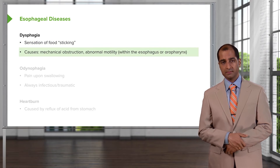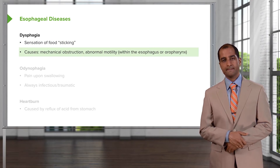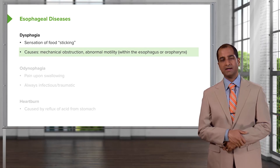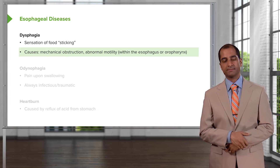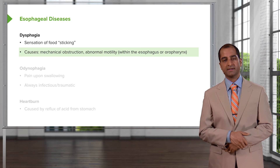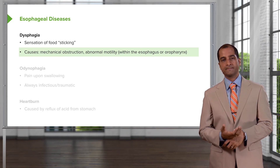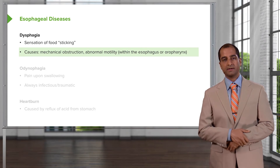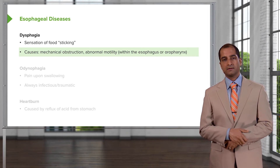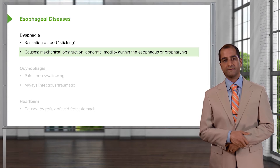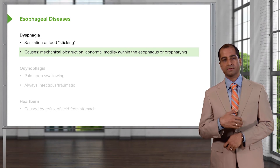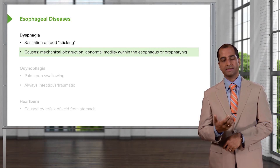Causes include mechanical obstruction. When we talk about the behavior of dysphagia — what kind of swallowing difficulty is the patient actually feeling? There's a possibility of mechanical obstruction; maybe the lower esophageal sphincter is not properly opening — welcome to achalasia. Maybe there's a tumor within the esophagus making it difficult to properly swallow. So the behavior of the dysphagia becomes a little bit different.